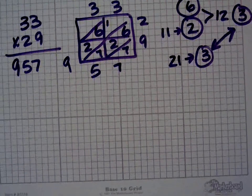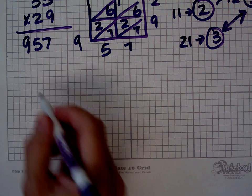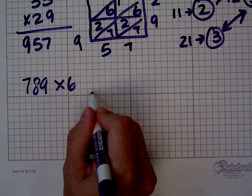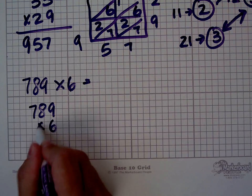It works for numbers of any magnitude. You can have two-digit numbers, three-digit numbers, five-digit numbers. Let's look at 789 times 6, and I need to write it this way or in a matrix.